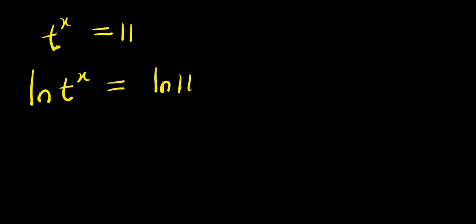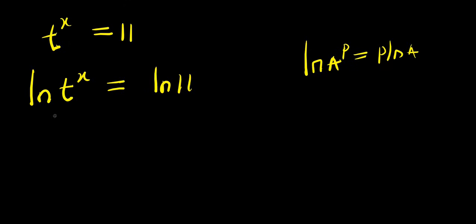Now, remember, natural log of a power b equals b times natural log a. So applying that here, I have x times natural log t equals natural log 11.